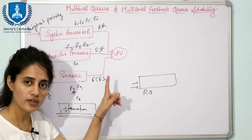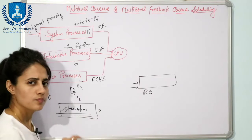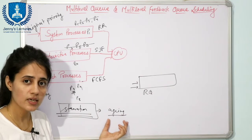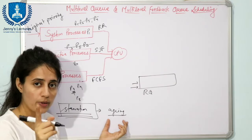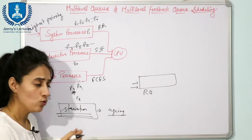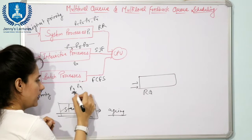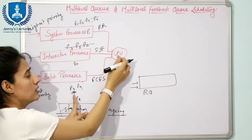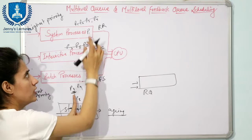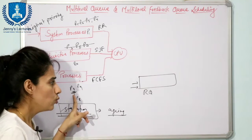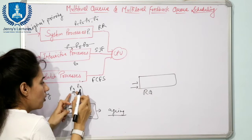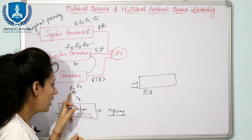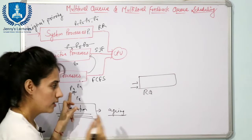To avoid the starvation problem, we can use aging. Suppose P8 is waiting for a long time while processes keep arriving in the higher-priority queues and the CPU keeps executing those instead. What we can do is promote the waiting process to a higher-priority queue. Increasing the priority of a waiting process after a certain amount of time is known as aging.